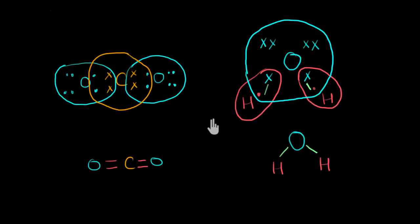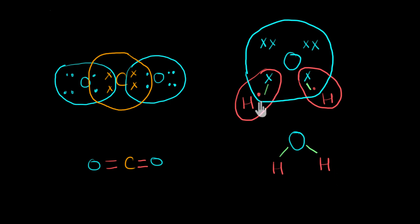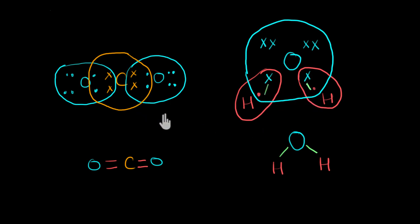To summarize: in this video, we saw how atoms of different elements share electrons and form covalent bonds. We also saw how to draw their electron dot structure and its simplified version. The principle remains the same — every atom wants to become more stable, wanting a complete octet or duplet. If an atom needs one electron, it shares one; if it needs two, it shares two, and so on.